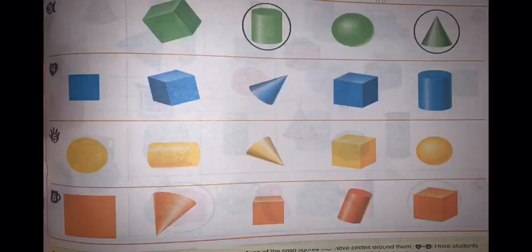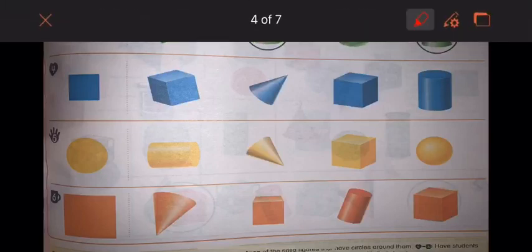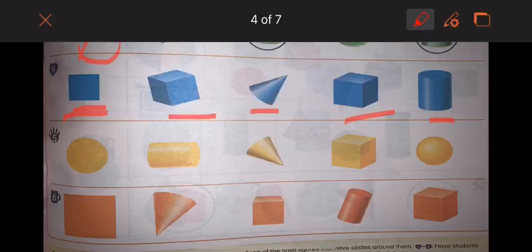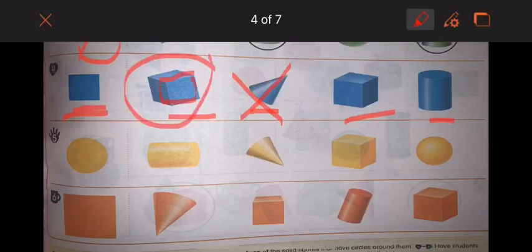Now number four. I have a square here. Which shapes here have a flat surface shaped like a square? Is it a cone? Of course not. Is it a cube? Look here, yes it is. And I have another cube here, so I will circle it as well. A cylinder? No it does not.